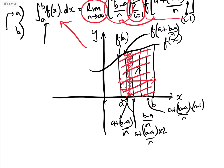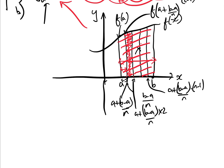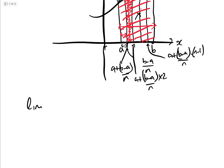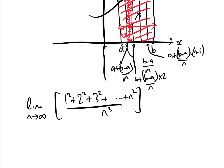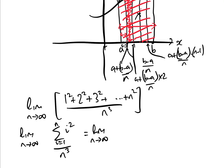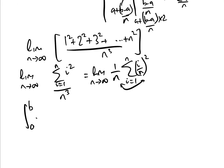So how do we use this to solve our original equation? We had the limit as n approaches infinity of (1² + 2² + 3² + ... + n²) over n cubed. We can rewrite this as the limit as n approaches infinity of the sum from i=1 to n of i²/n³, and then as the limit of (1/n) times the sum of (i/n)². Here n is a constant so we can move it in and out of the summation.